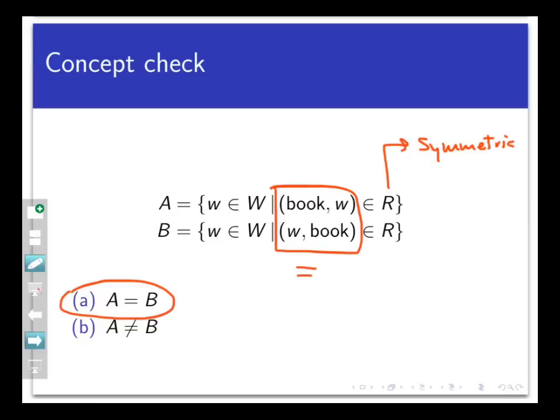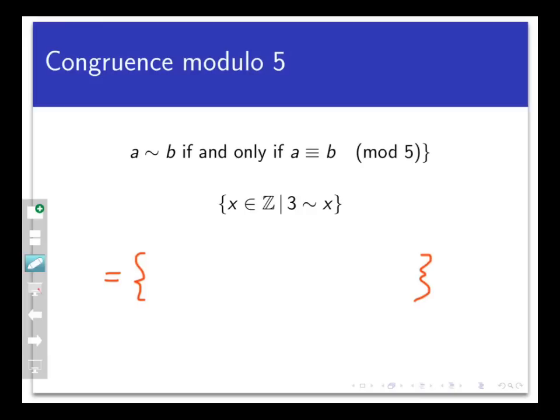Here's another similar example. Another important equivalence relation on the set of integers was the congruence mod n relation. Specifically, let's choose n equal to 5, and recall that we had the relation tilde on the set of integers by saying that a was related to b, a ~ b, if and only if a is congruent to b mod 5. We saw that was an equivalence relation. In fact, we could change the 5 to any natural number we wish, and it would still be an equivalence relation.